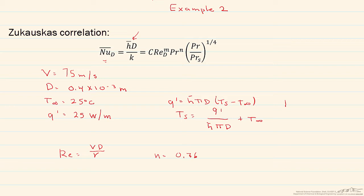Now, unlike most of the other correlations, our properties are looked up at not the film temperature, but the properties are looked up at the bulk temperature, except for our Prandtl number at the surface, which is looked up at the surface temperature. So let's take a look at the properties that we're going to need in order to solve this.